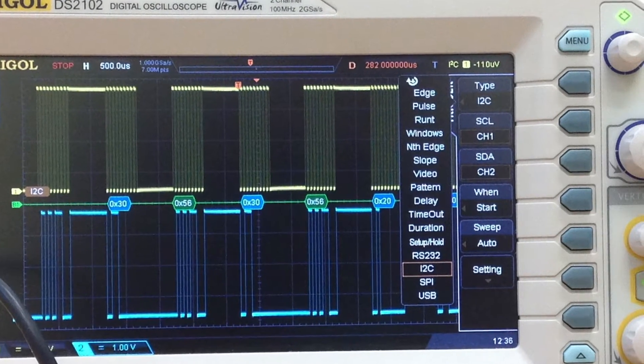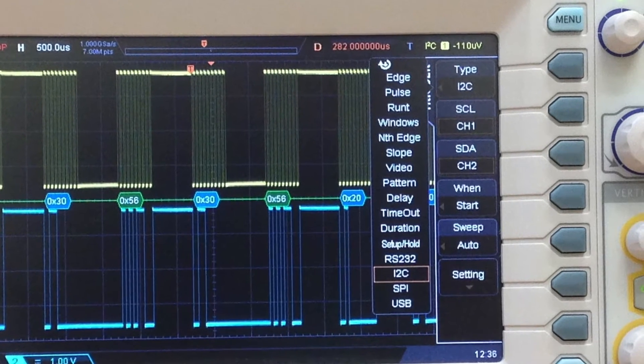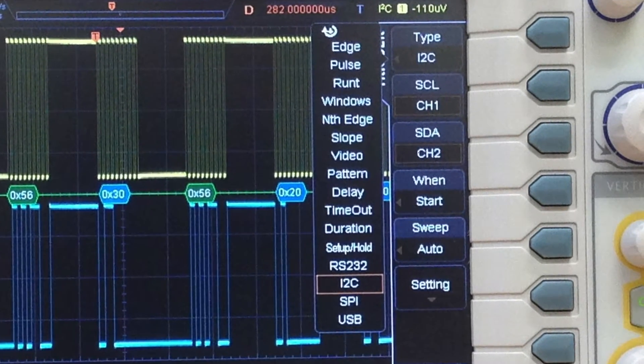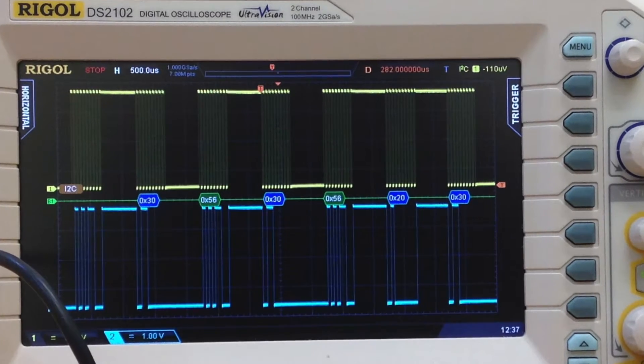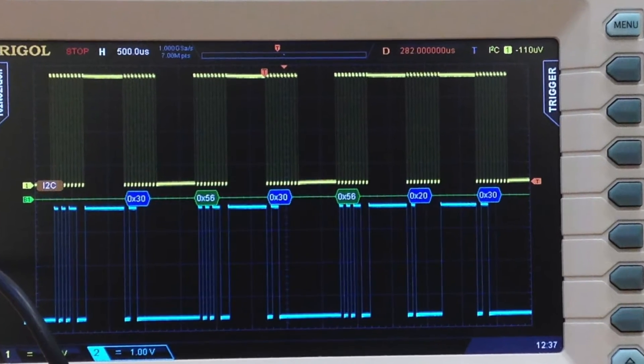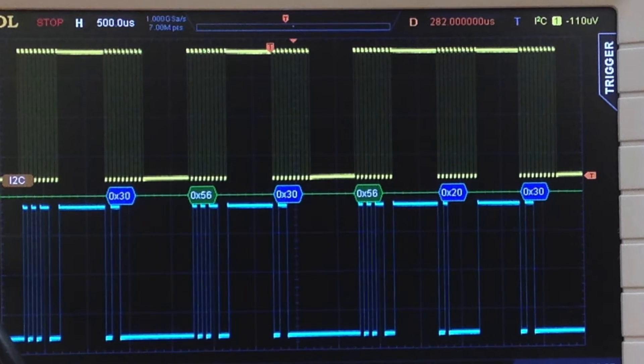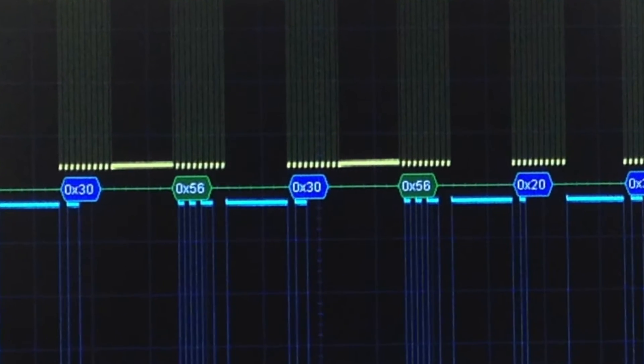There's a large variety of trigger functions on the DS2000 including serial bus trigger capability. As well as serial bus trigger, the DS2000 features optional serial bus decoding functions for RS232, I2C, SPI, and CAN.